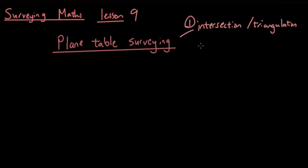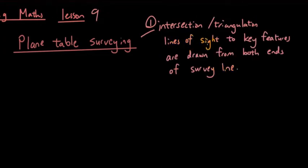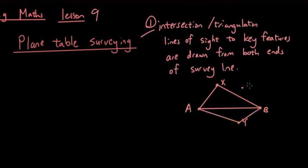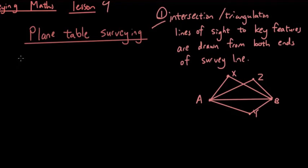Method one: intersection and triangulation. It is when the lines of sight to key features are drawn from both ends of the survey line. If you remember, there's a survey line going from A to B, and for a point X or Y that we're trying to map, you draw a straight line from A to Y and from B to Y. For a new point Z, you draw a line from A to Z and from B to Z.